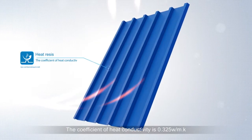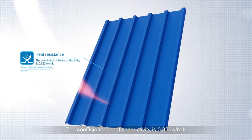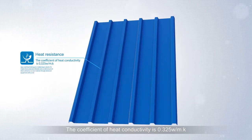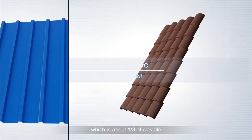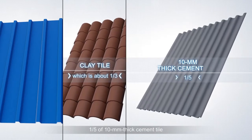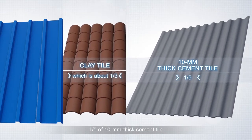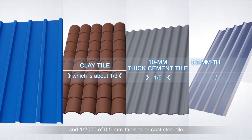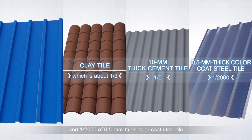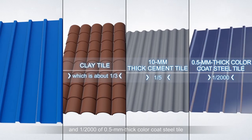The coefficient of heat conductivity is 0.325 W/MK, which is about one-third of clay tile, one-fifth of 10mm thick cement tile, and one-two-thousandth of a half-millimeter thick color-coat steel tile.